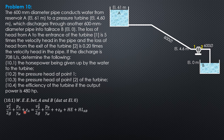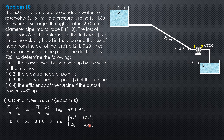Pressure head at A is 0 (exposed to atmosphere), elevation head is 61. Velocity head at B is 0, pressure head at B is 0, elevation head at B is 0. Head loss is 5 times the velocity head in the pipe, plus 0.2 times the velocity head in the pipe. Since the pipe diameter is constant, the velocity head is the same throughout, so head extracted equals 61 minus 5.2 times the velocity head.